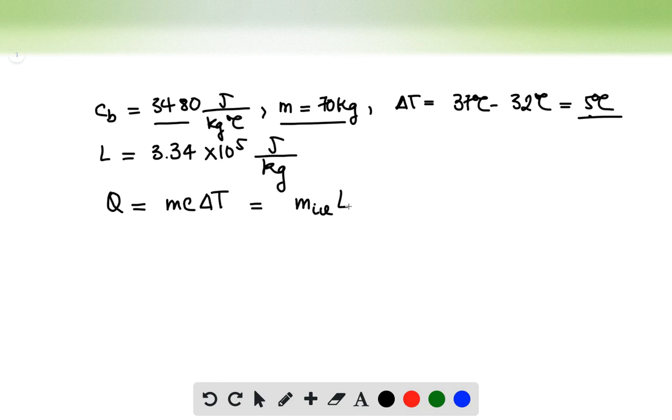Now we can just plug in numbers. We have 70 kg times 3480 joules per kilogram Celsius times 5 Celsius is equal to the mass of the ice times the latent heat.